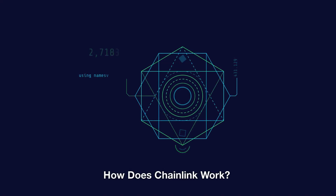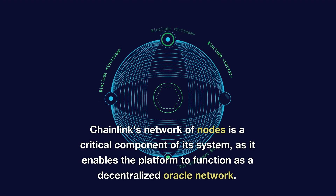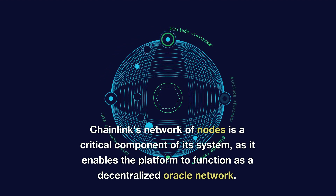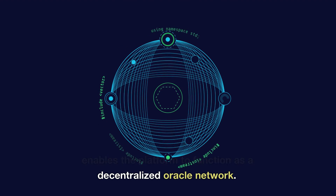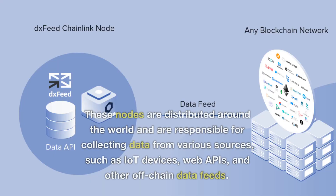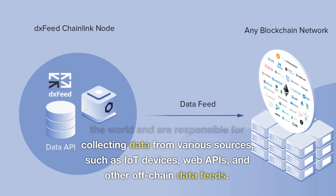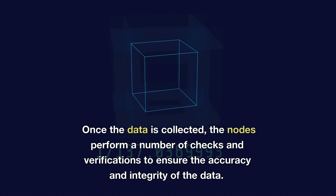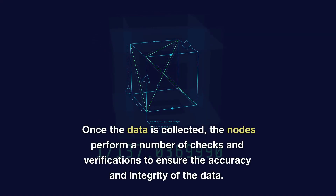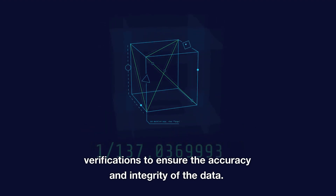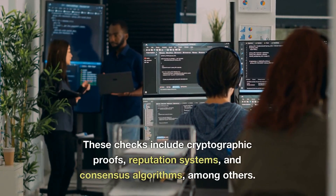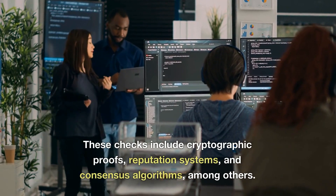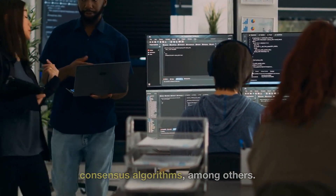How does Chainlink work? Chainlink's network of nodes is a critical component of its system, as it enables the platform to function as a decentralized oracle network. These nodes are distributed around the world and are responsible for collecting data from various sources, such as IoT devices, web APIs, and other off-chain data feeds. Once the data is collected, the nodes perform a number of checks and verifications to ensure the accuracy and integrity of the data. These checks include cryptographic proofs, reputation systems, and consensus algorithms, among others.